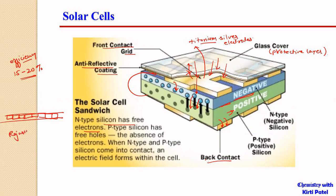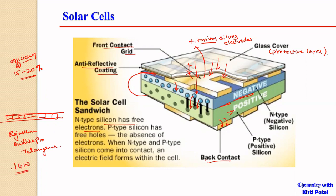Solar panels can be utilized for large-scale power generation. In Andhra Pradesh and Telangana, there is a large-scale generation of solar power with a target of one gigawatt of solar power generation, and the government is moving fast to achieve that target through installation of solar panels.